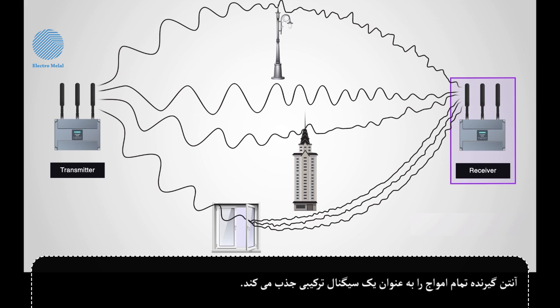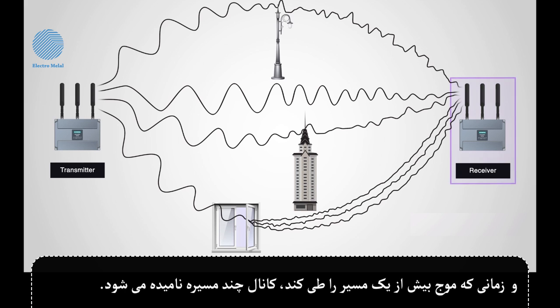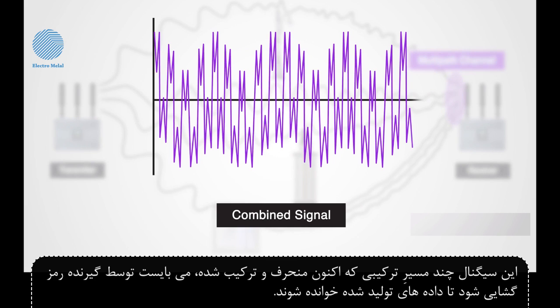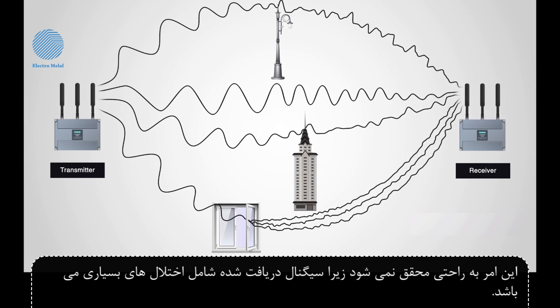The receiving antenna captures all the waves as a combined signal, and when the wave travels more than one route, it is called a multipath channel. This multipath-generated combined signal, now distorted and mixed, must be decoded by the receiver to read the data generated. This is not easily accomplished since the received signal contains a lot of unwanted anomalies.